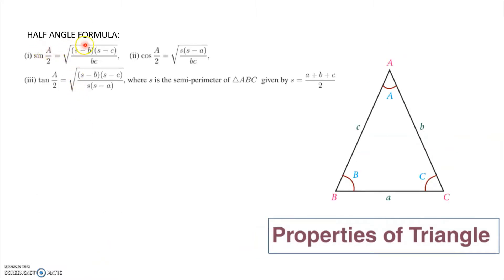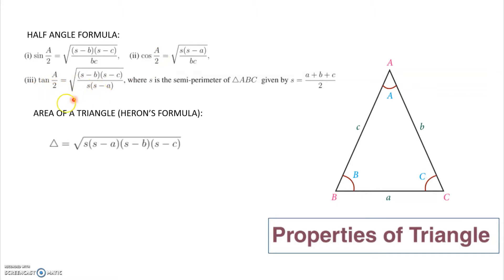The half angle formula for sin(A/2) is given by the square root of (s minus b) into (s minus c) divided by bc. Similarly, cos(A/2) and tan(A/2) can be derived. The area of the triangle according to Heron's formula is the square root of s into (s minus a) into (s minus b) into (s minus c), where s equals (a plus b plus c) by 2.